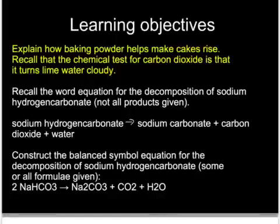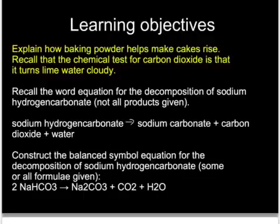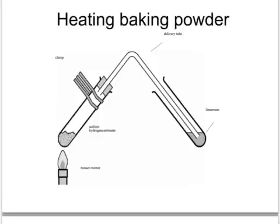You need to know how baking powder helps cakes rise and the test for carbon dioxide, which is made when this substance is heated. You need to know the word equation and also, given a little help in the question, the symbol equation for this reaction. You may have done this reaction in the lab — heating baking powder. Baking powder, chemically, is sodium hydrogen carbonate.